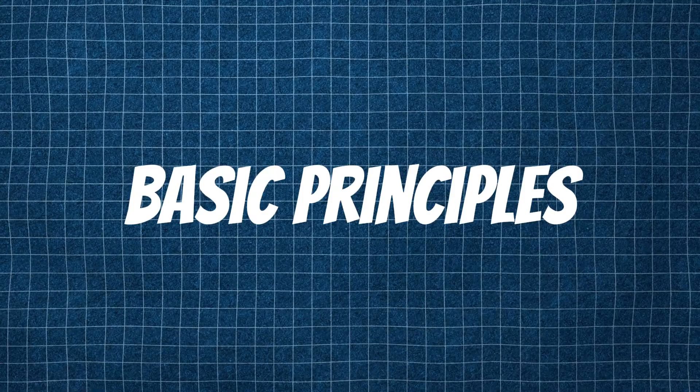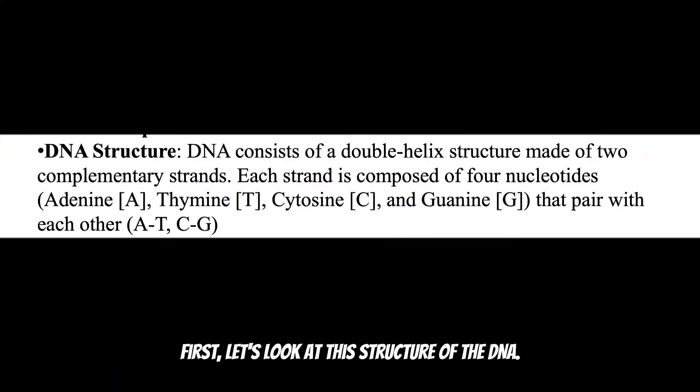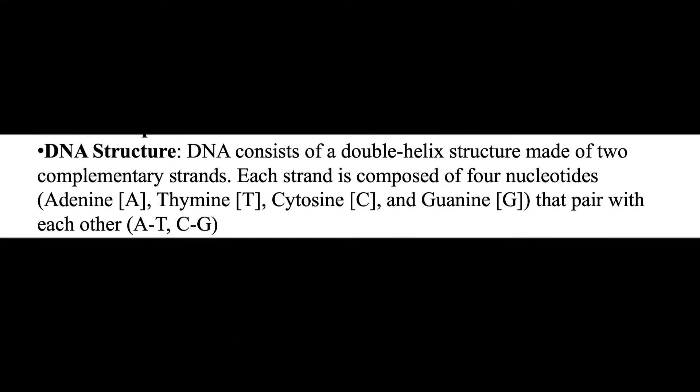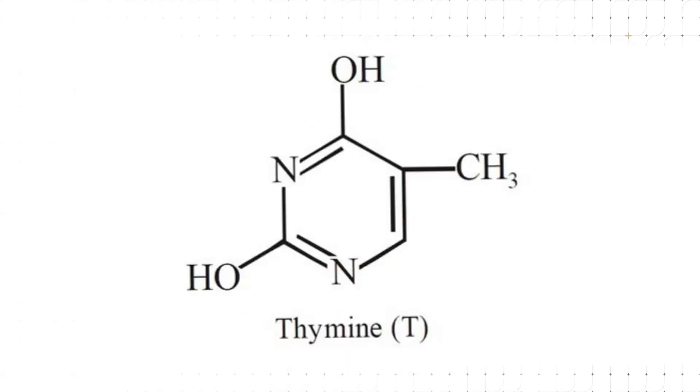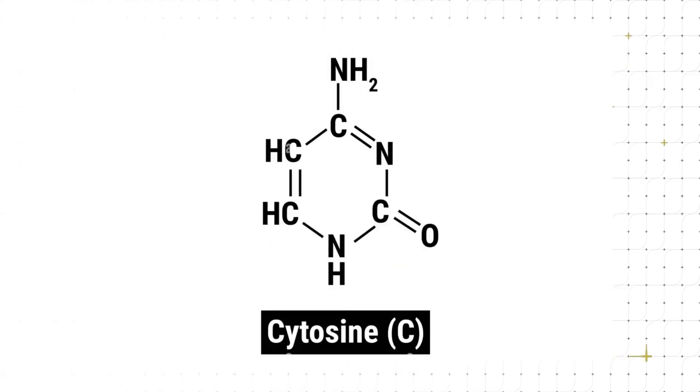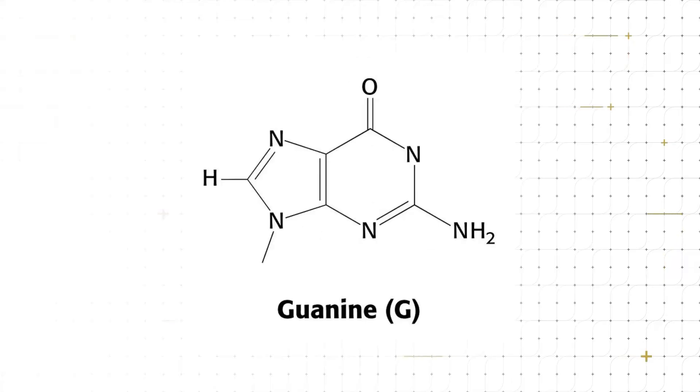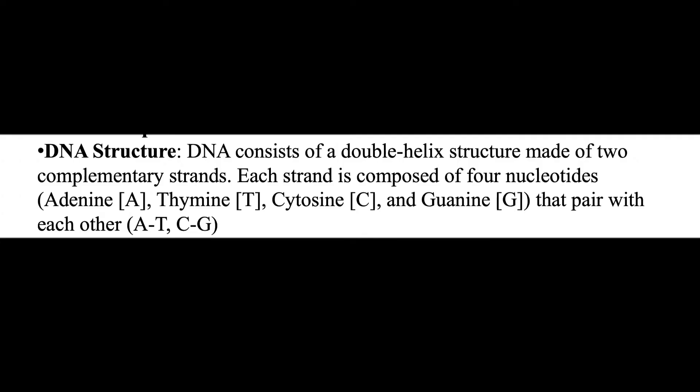So, basic principles. First, let's look at the structure of DNA. DNA consists of a double helix structure made up of two complementary strands. Each strand is built from four nucleotides: adenine (A), thymine (T), cytosine (C), and guanine (G), which pair specifically with each other. A pairs with T and C pairs with G.